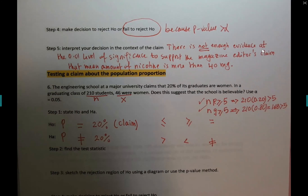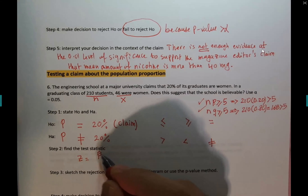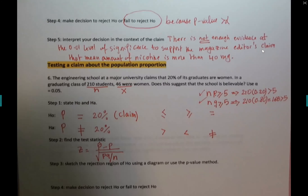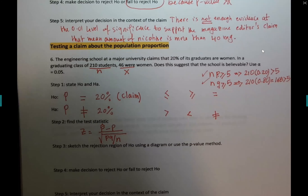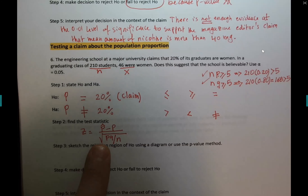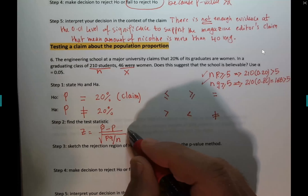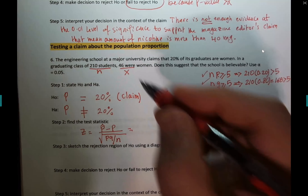The test statistic has a formula: z = (p-hat − p) / sqrt(pq/n). You don't have to do this by hand — I'll show you the calculator method — but this is the formula just like the others. p-hat is the sample proportion: x over n. So that's 46 divided by 210.